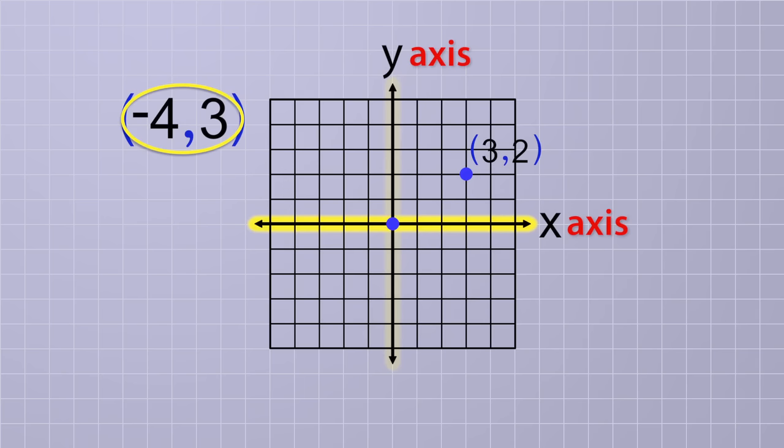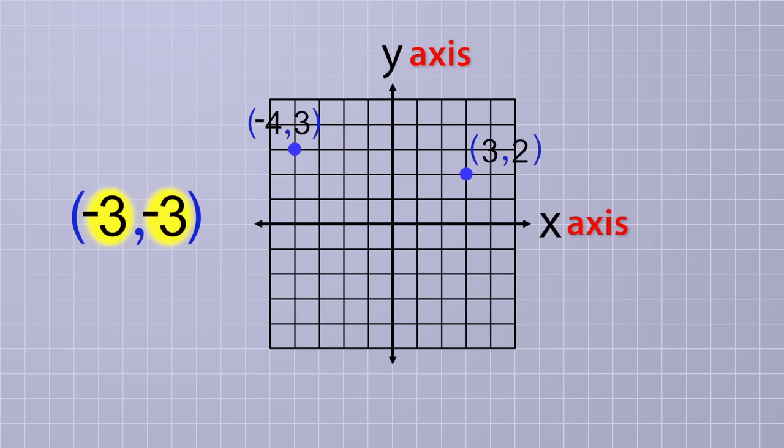Let's plot the coordinates (-4, 3). Again, we start by imagining a point at the origin and then let the coordinates tell us how far to move it along the x and y axes. Since x is negative 4, we move the point a distance of 4 units, but this time in the negative x direction, which is to the left. And then, since y is positive 3, we move the point a distance of 3 units in the positive y direction.